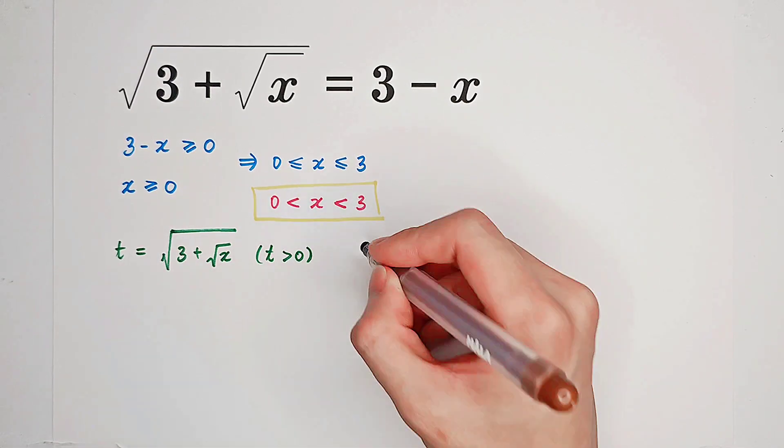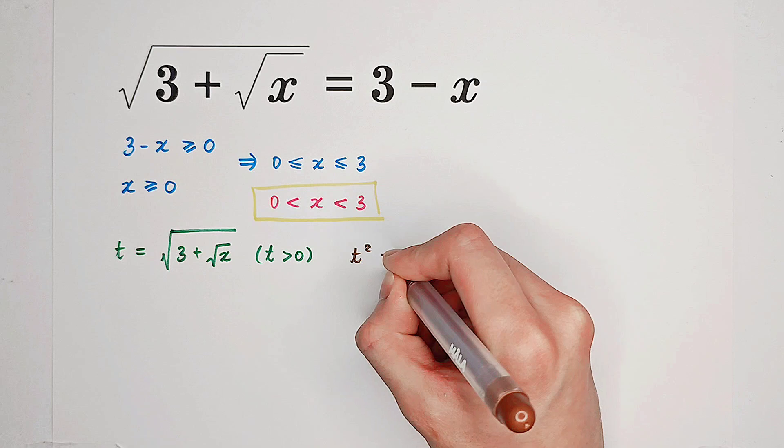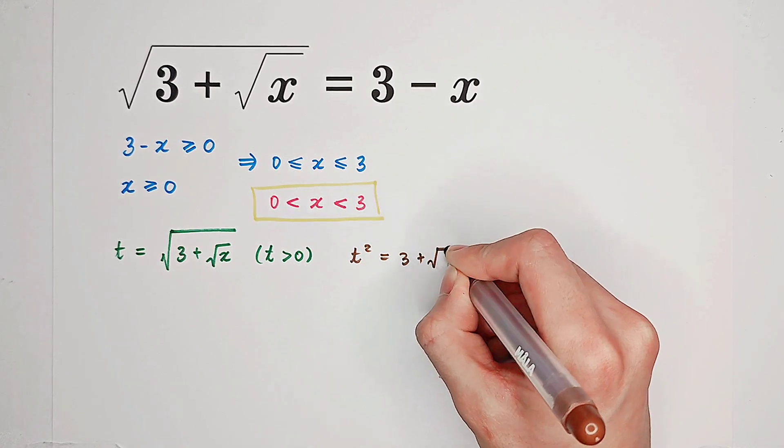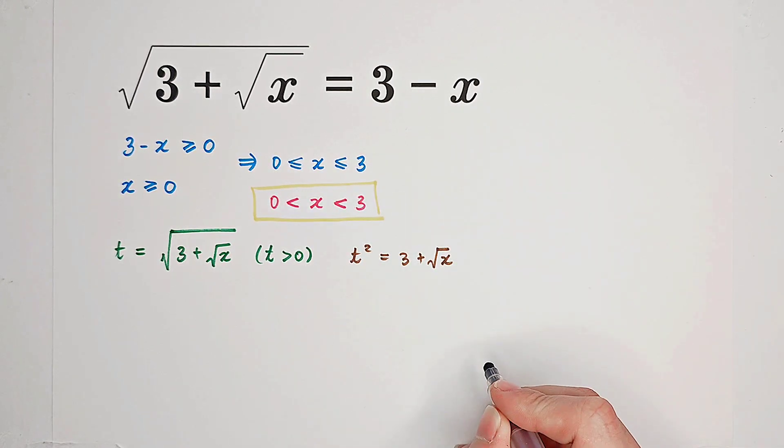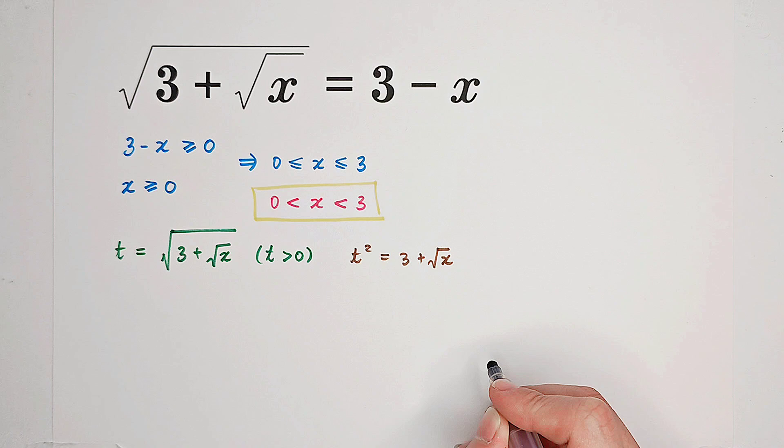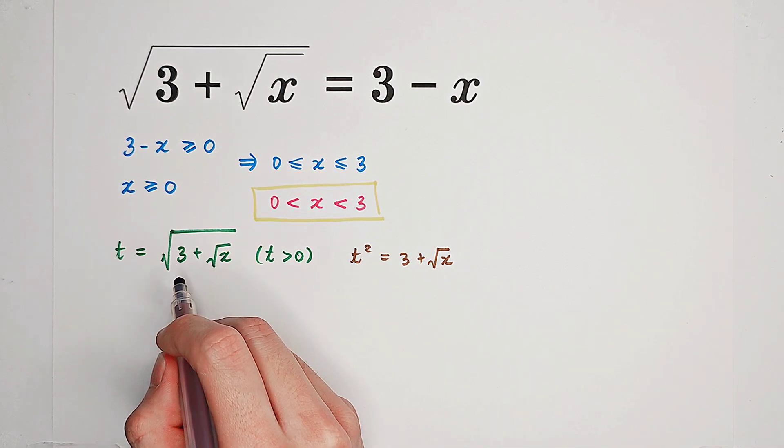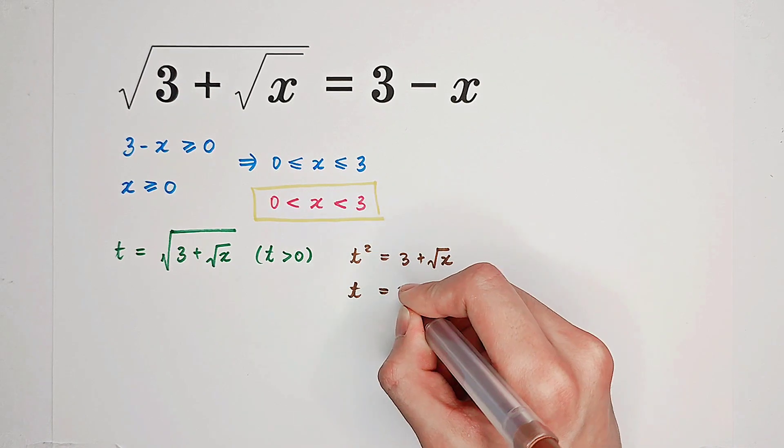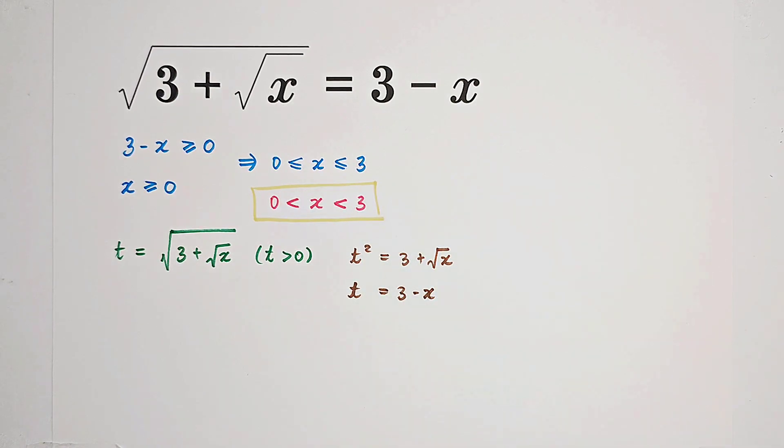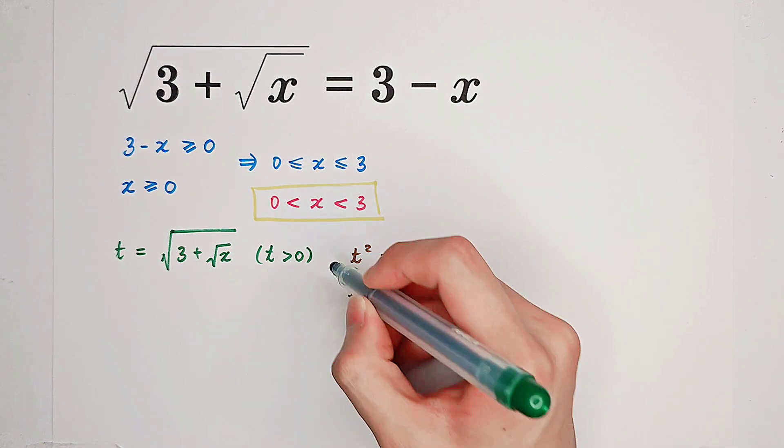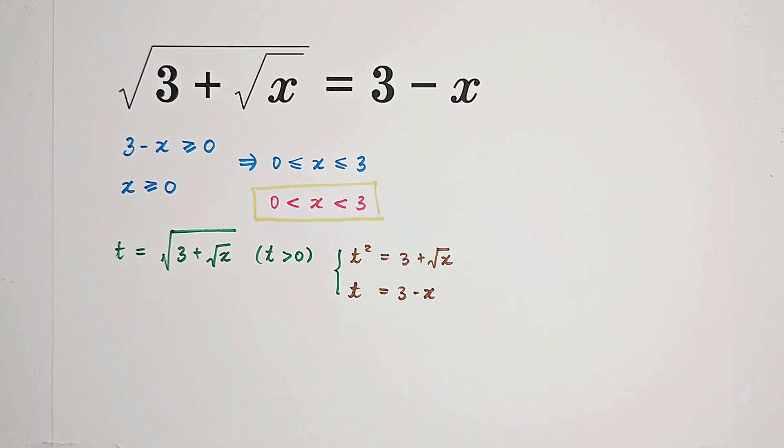From this equation, we can get t squared is 3 plus square root of x. And if we substitute t back into our original equation, then we get t equals 3 minus x. So now we actually get a system of equations about t and x.